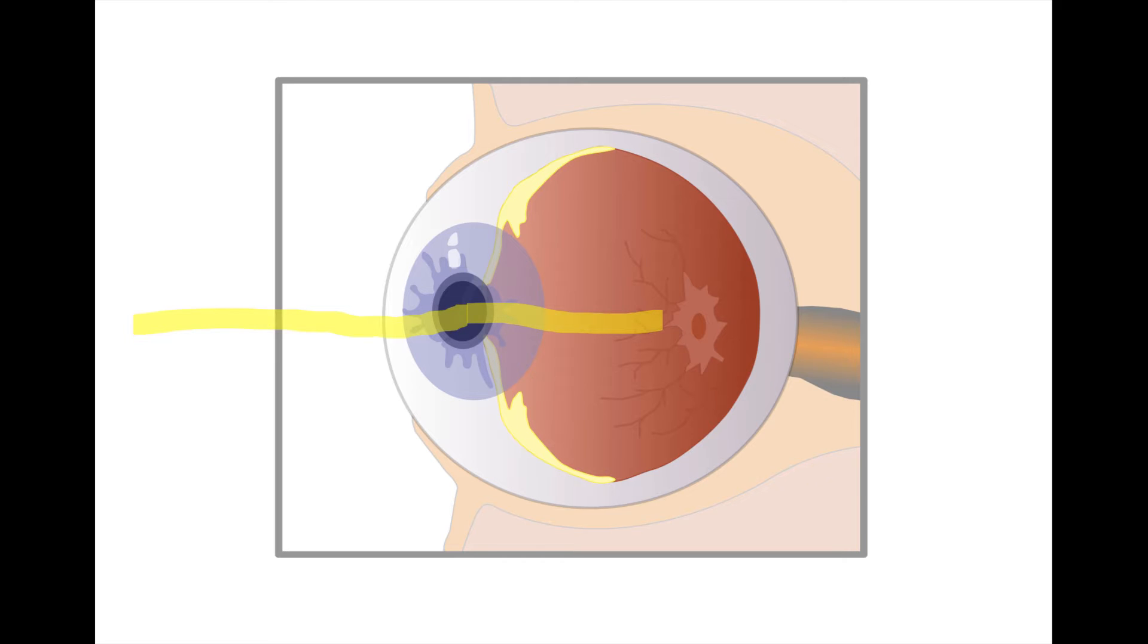The retina is filled with photoreceptor cells that are responsible for translating light into a neural signal. This information then begins its journey to the brain on the second cranial nerve, also known as the optic nerve.